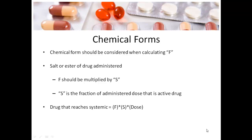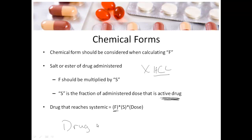We also have things such as chemical forms to consider when calculating bioavailability. We have things such as salts or esters of a drug — sometimes you'll see a drug name ending in HCl, indicating different salt forms. To account for that, we multiply bioavailability times S, where S is the fraction of administered drug that is active. So our equation becomes: drug that reaches systemic circulation equals bioavailability times S times dose.